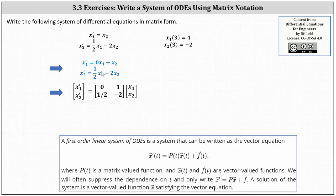Looking at the right side of the equation, because we have zero times x one plus one times x two from the first equation, the first row of p of t is zero and one, and then in the second equation, we have one-half times x one minus two times x two, indicating the second row is one-half and negative two.